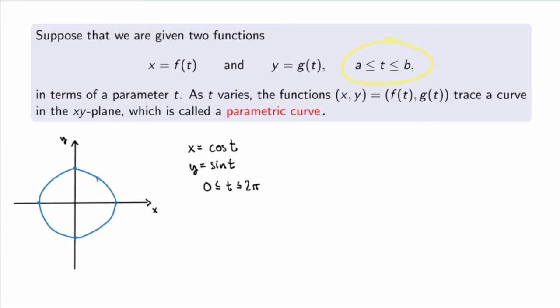A parametric curve is a little more than just a curve, because we also have an orientation. We can draw a little arrow showing the direction of increasing parameter t. Starting at t equals 0 and moving along the circle until at t equals 2π we return to the same original point. So a parametric curve is a curve with an orientation given by increasing parameter t.